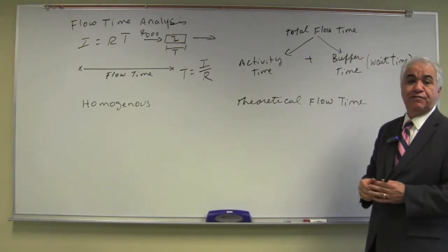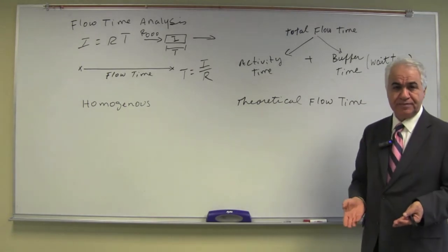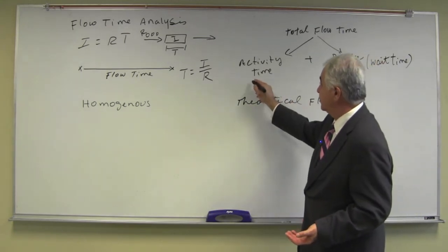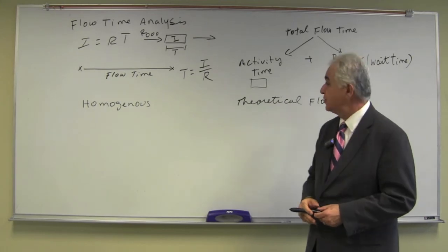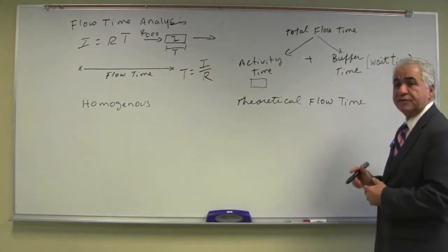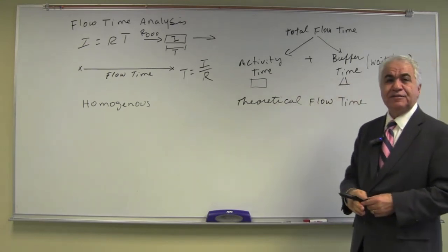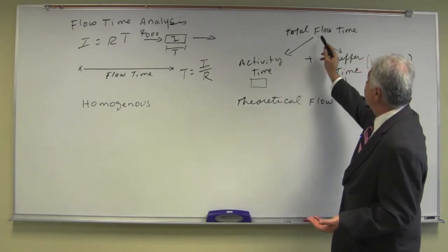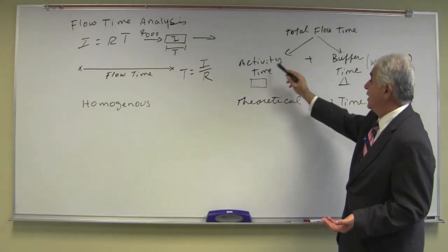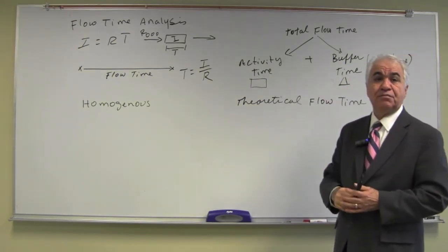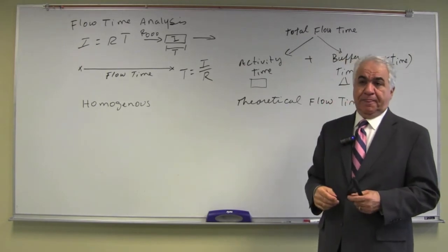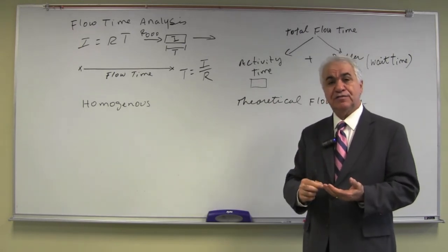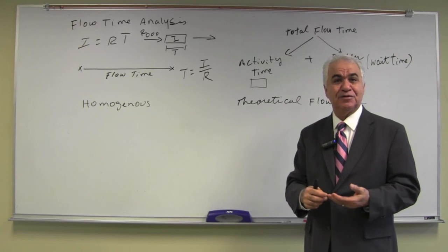The total flow time of a flow unit through the process has two components. One is the activity time — that's where the actual work takes place, generally represented as such in a flow map — plus the buffer time. Often the buffer time we can think of as wait time. So there are two components of the total flow time: activity time and buffer time. For the most part, a considerable amount of the total flow time is actually buffer time, or wait time.